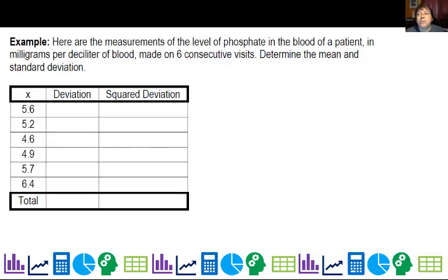So let's go ahead and look at another example. Here are the measurements of the level of phosphate in blood of a patient, in milligrams per deciliter of blood made on six consecutive visits. Determine the mean and standard deviation.